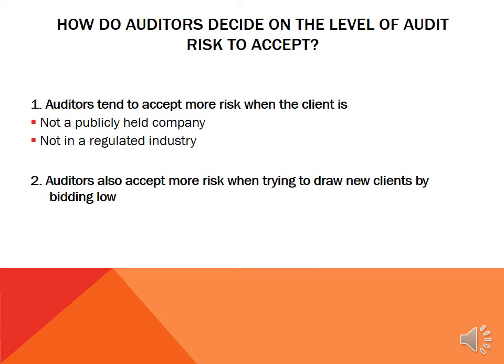How do auditors decide on the level of audit risk they'll accept? We tend to accept more risk when the client is not publicly held and not in a regulated industry. The reason is that there are fewer people who will have to rely on the financial statements we audit. If it's a publicly held company, there are all those shareholders and potential investors relying on the financial statements, and a wrong audit opinion can affect millions of people.